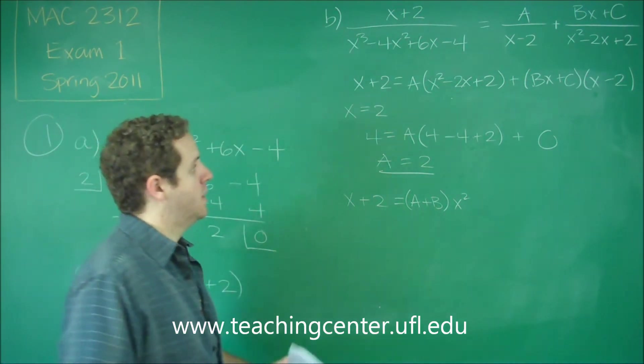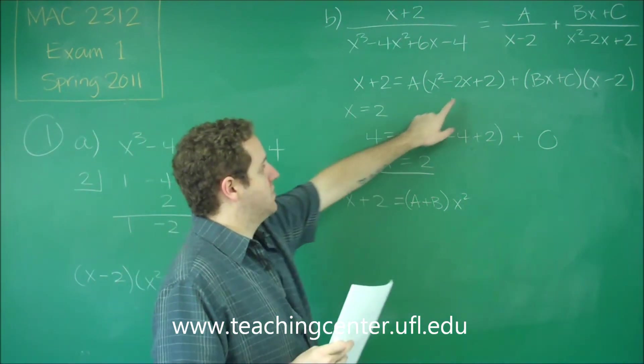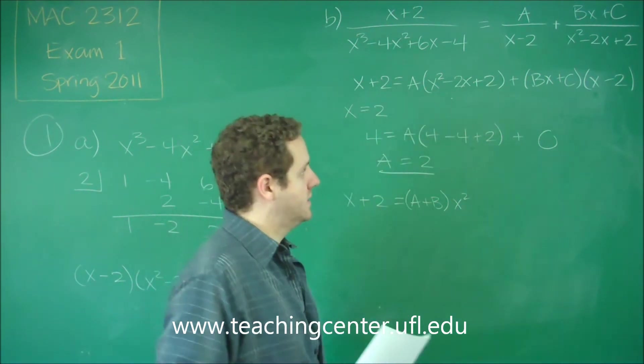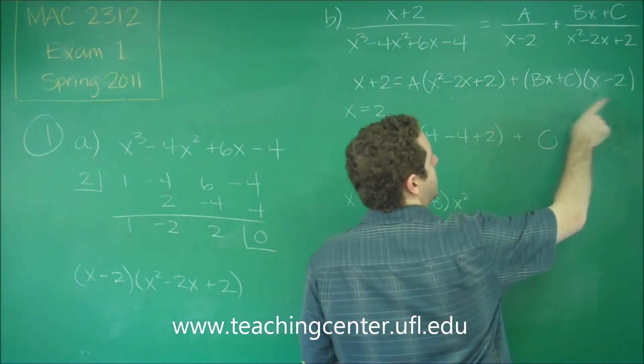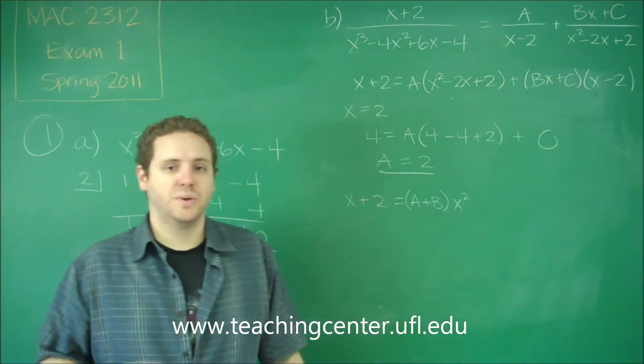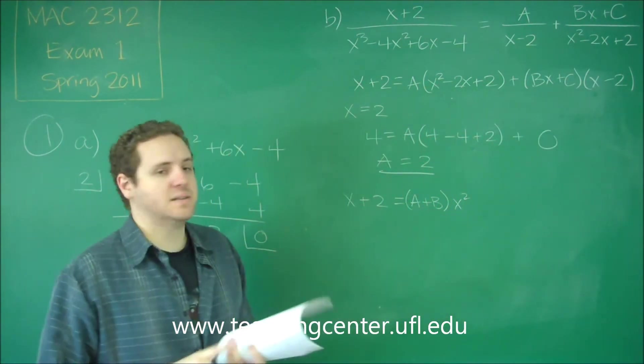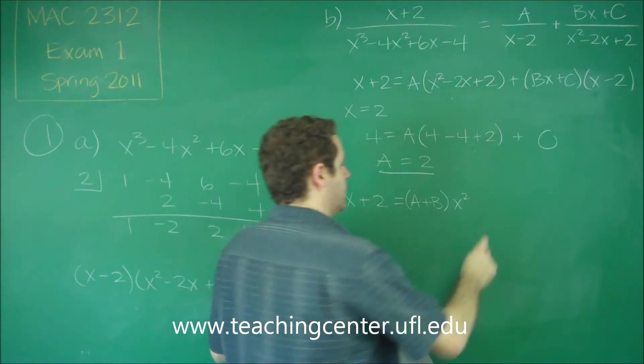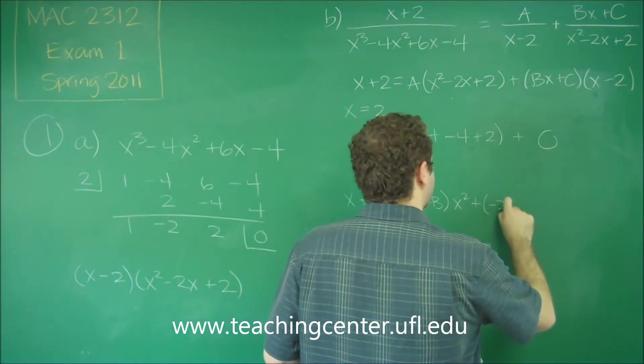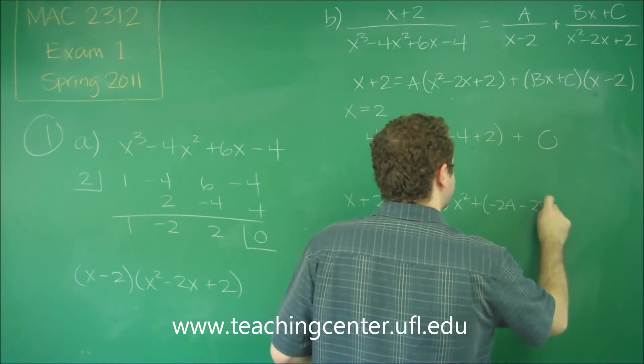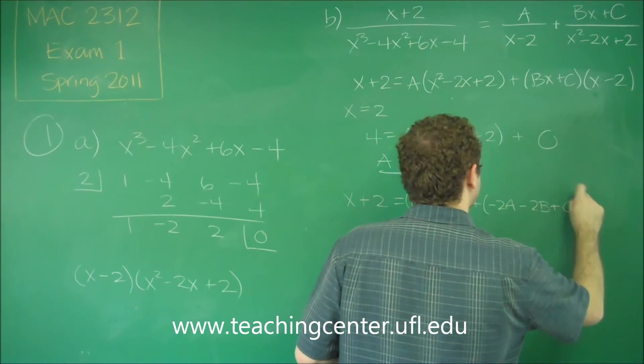Let's see what we would get for the rest of them. For the x terms, we would have negative 2A if we distributed that A. Over here, we'd have a negative 2B and a C all on x. So we have a negative 2A, a negative 2B, and a C all times x. So if we added all those together, of course, we'd get negative 2A minus 2B plus C times x.